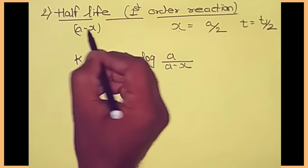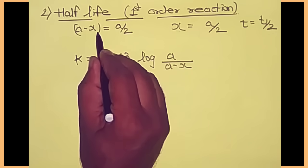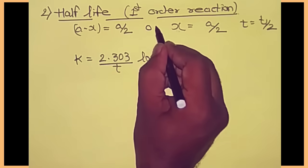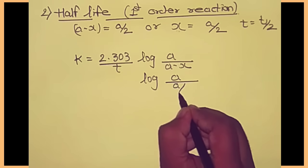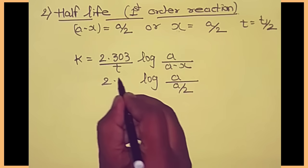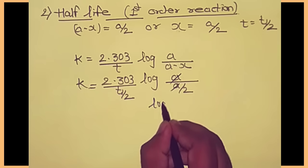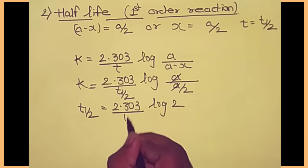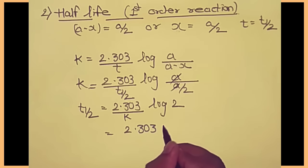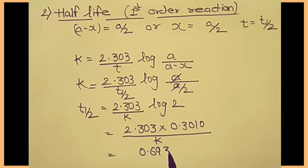If half of the reactant is converted to product, the remaining will also be half. So a minus x is also a by 2. We can use either x equals to a by 2 or a minus x equals to a by 2. It becomes log of a upon a by 2, so a's cancel and 2 goes to the numerator. Thus t half equals to 2.303 log 2 upon k. Since 2.303 into log 2 equals 0.693, we get t half equals to 0.693 upon k.